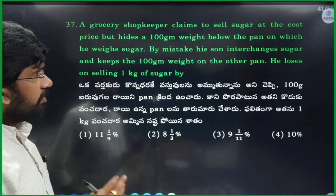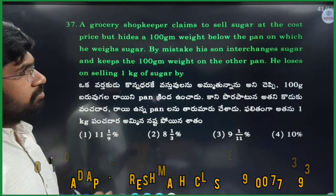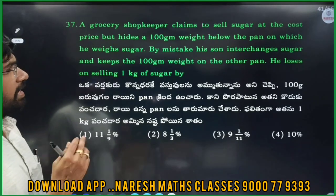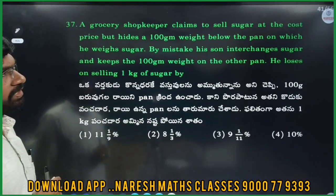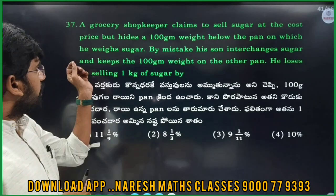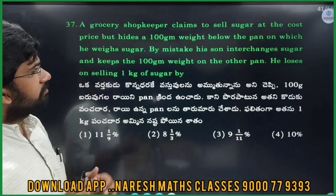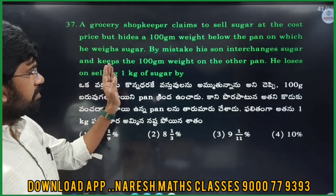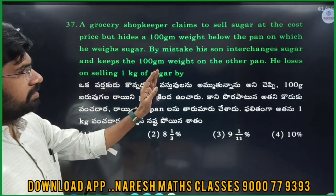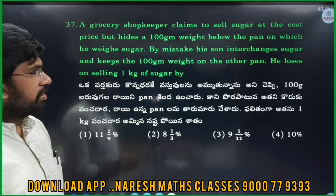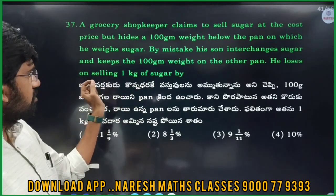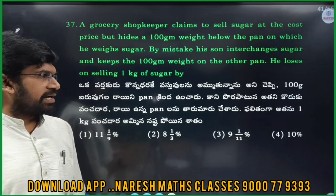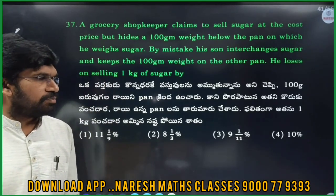A grocery shopkeeper claims to sell sugar at cost price, but hides a 100 gram weight below the pan on which he weighs sugar. By mistake, his son interchanges the sugar and keeps the 100 gram weight on the other pan.